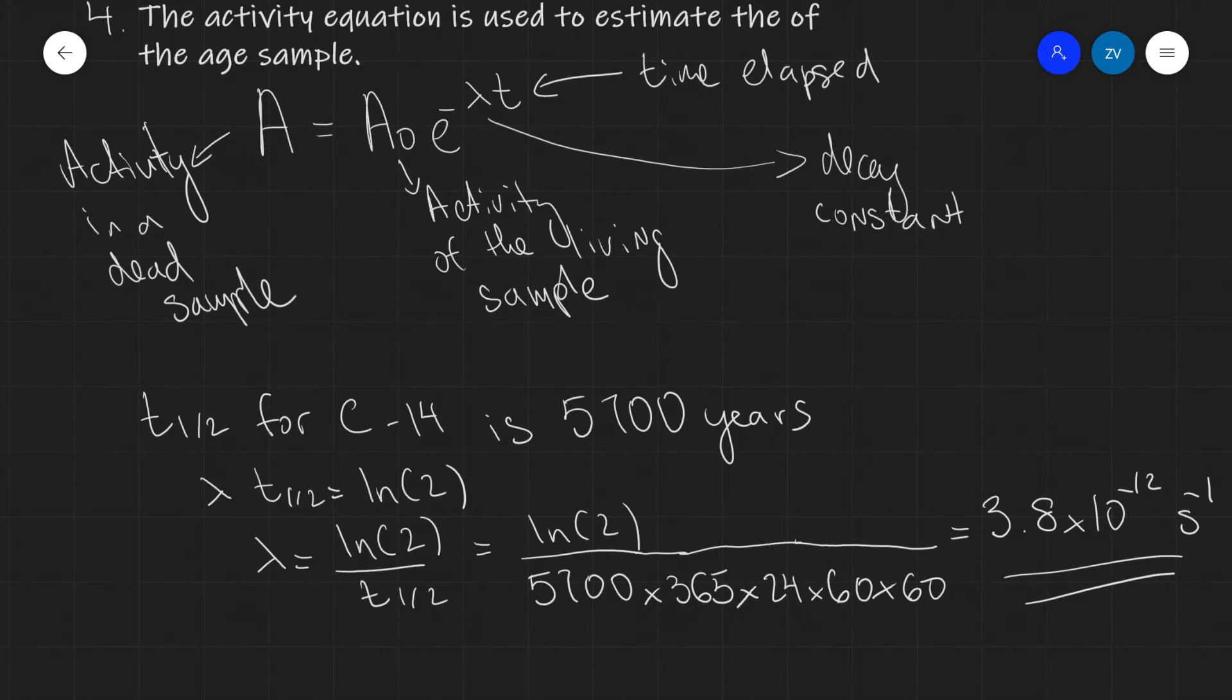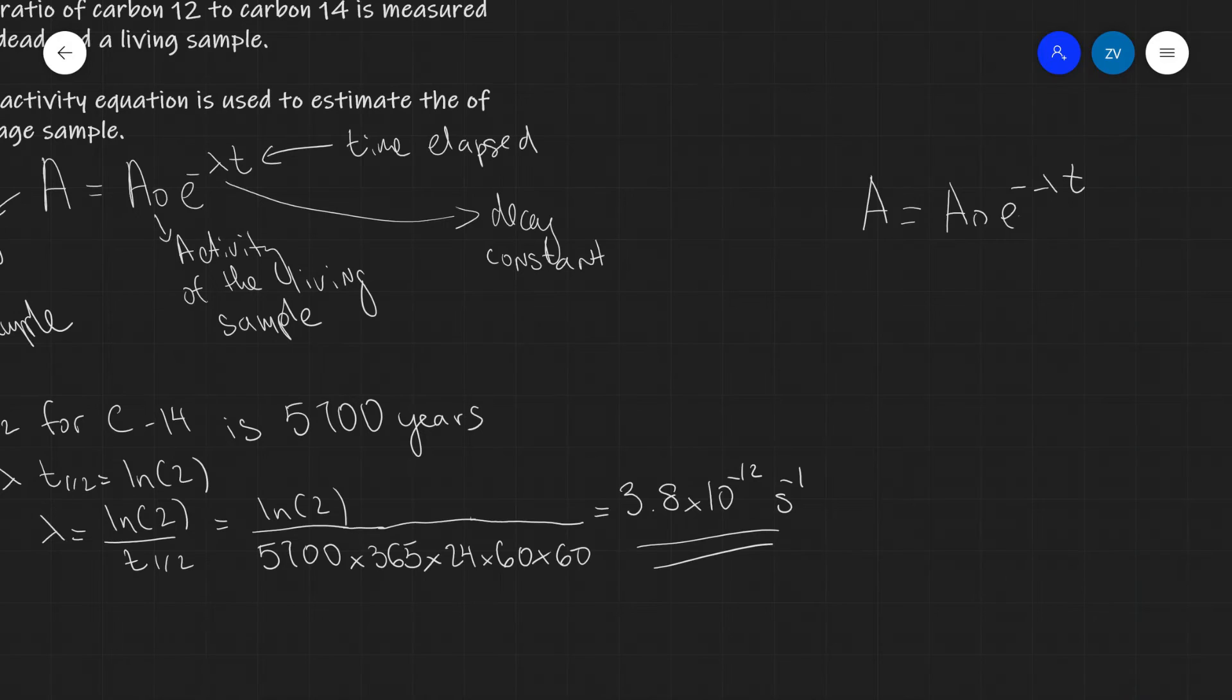So all we need now is an activity from a dead sample and an activity from a living sample, and we're ready to rearrange this equation for t. How could we rearrange for the time? Let's quickly revise that.